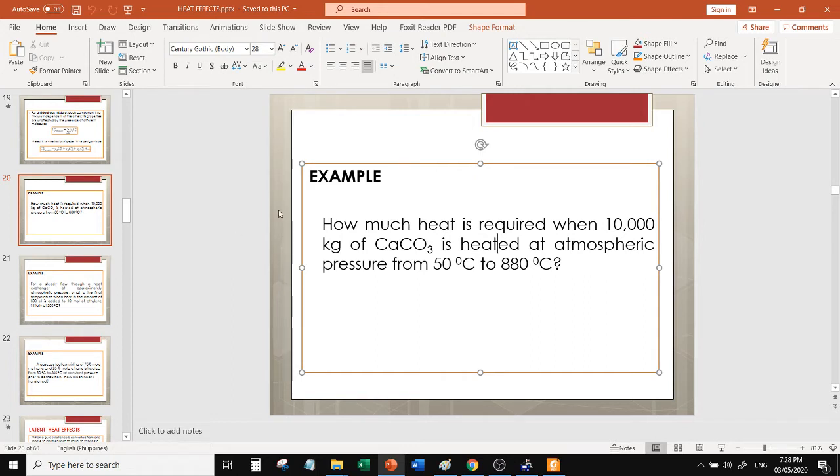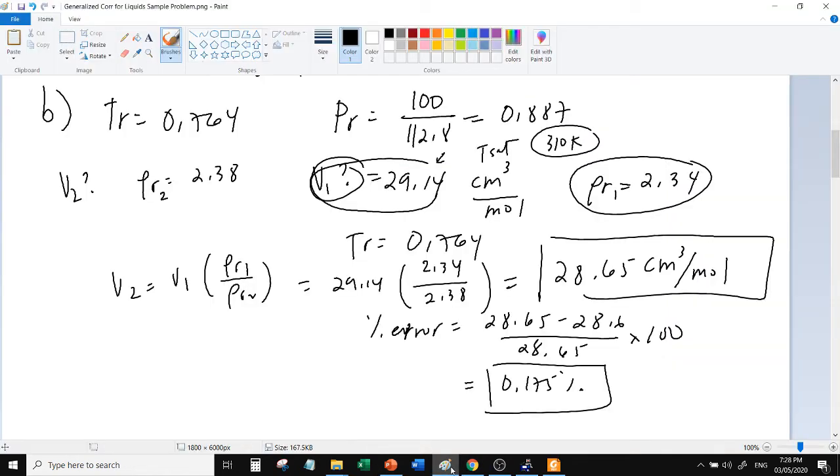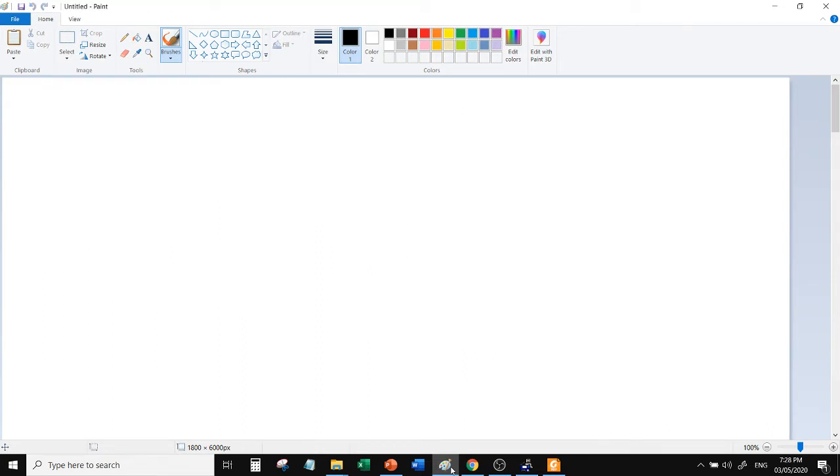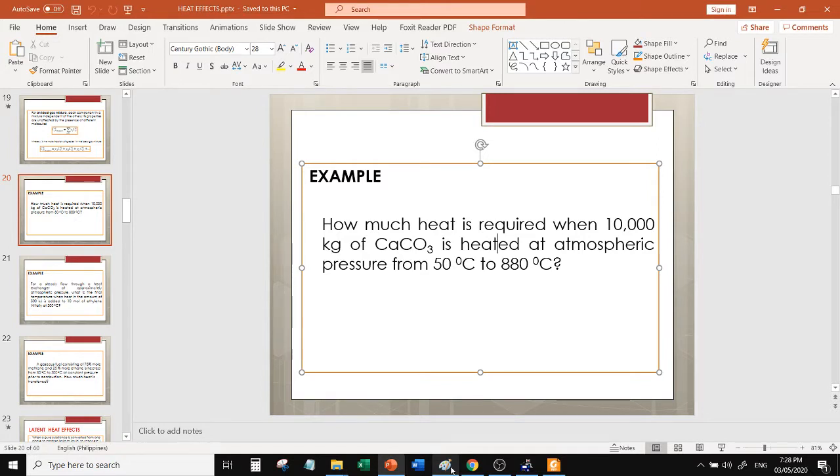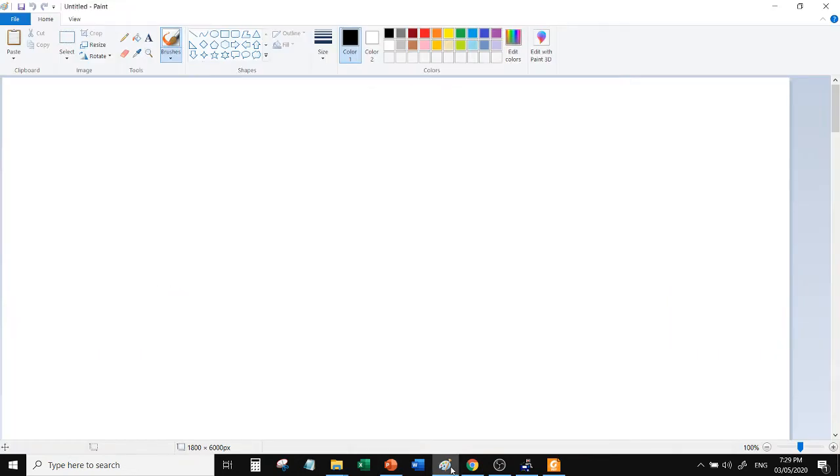Okay. So, what is the given problem here? Calcium carbonate. Initial temperature, 50 degrees Celsius to final temperature, 880 degrees Celsius. And then, okay, new problem. The pressure during this time when the temperature changes is constant at atmospheric pressure.